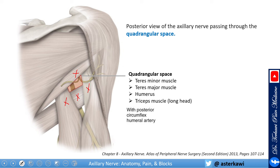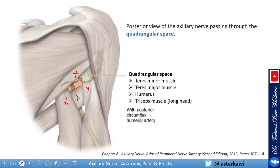It contains the axillary nerve as well as the posterior circumflex humeral artery. In this view, you see an overview of the course of the axillary nerve and how it branches and bifurcates as it leaves the quadrilateral space and takes the turn.